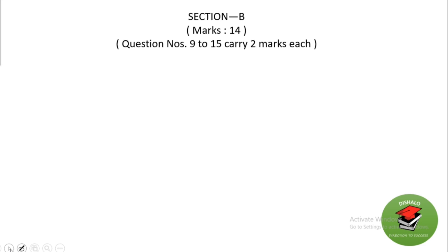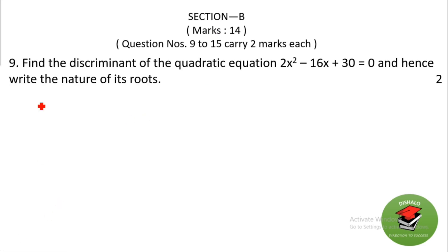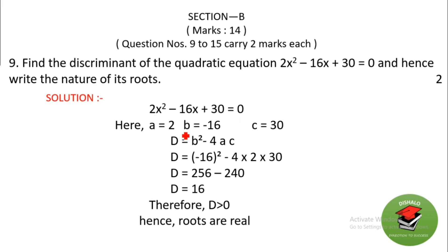Section B carries two marks each. Find the discriminant of the quadratic equation and state the nature of its roots. Here a = 2, b = −16, c = 30. Applying the formula D = b² − 4ac: D = (−16)² − 4×2×30 = 256 − 240 = 16. Since D is greater than 0, the roots are real.